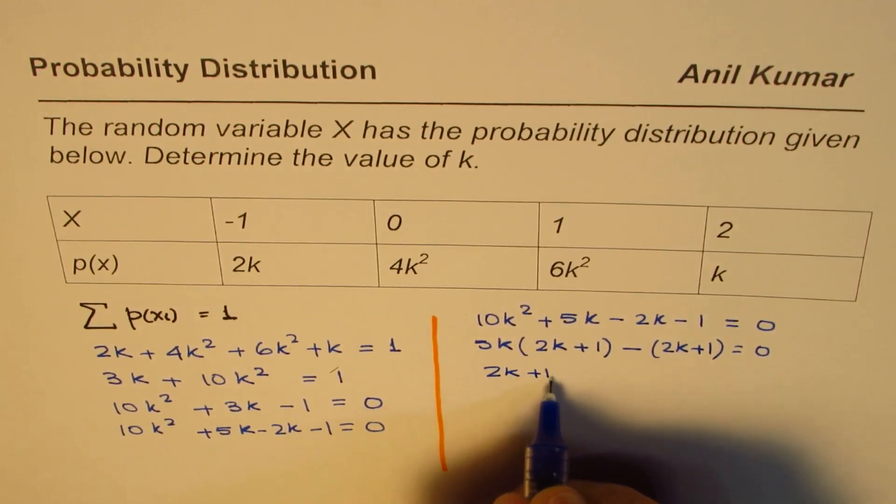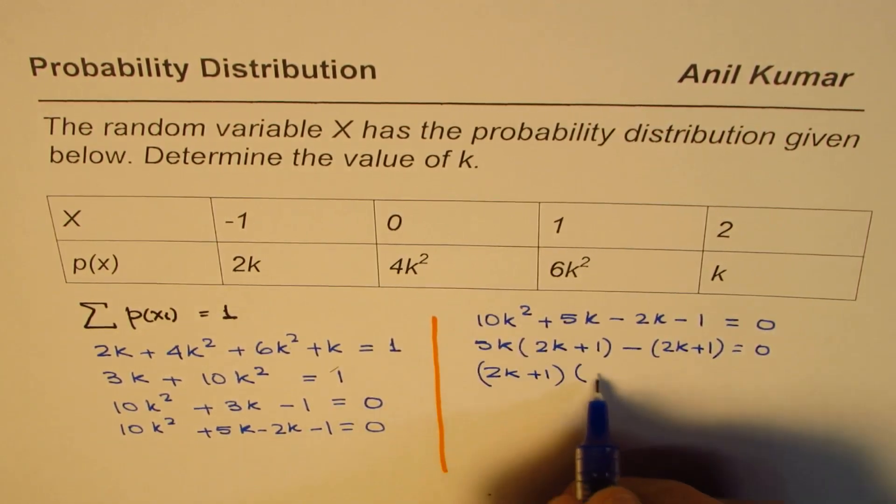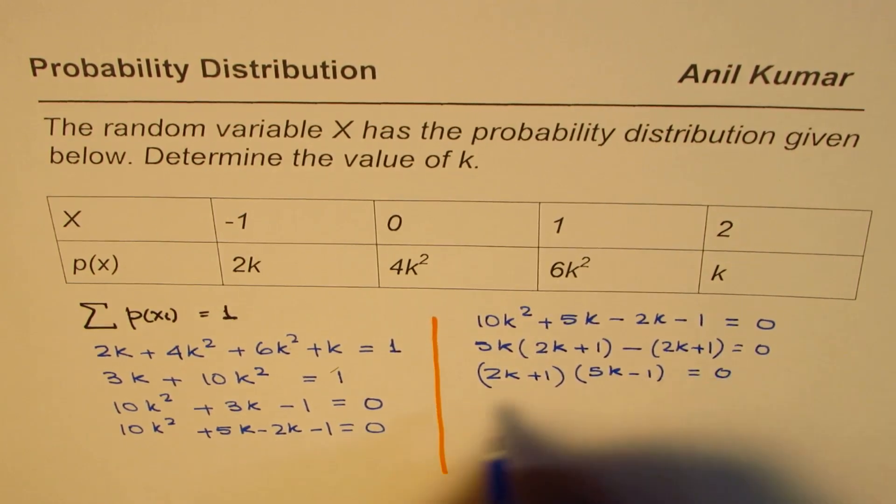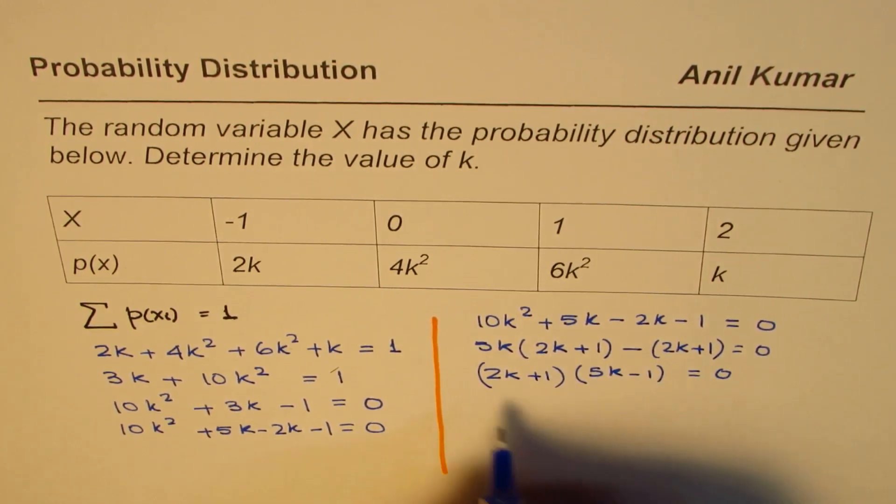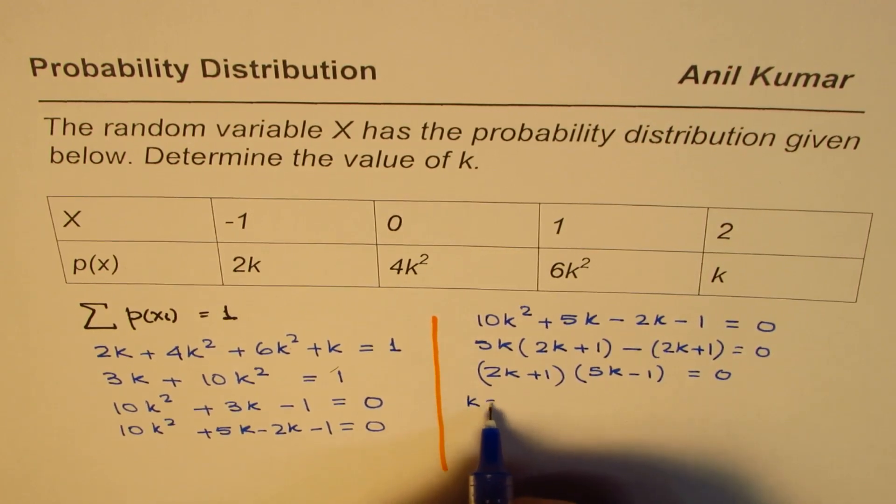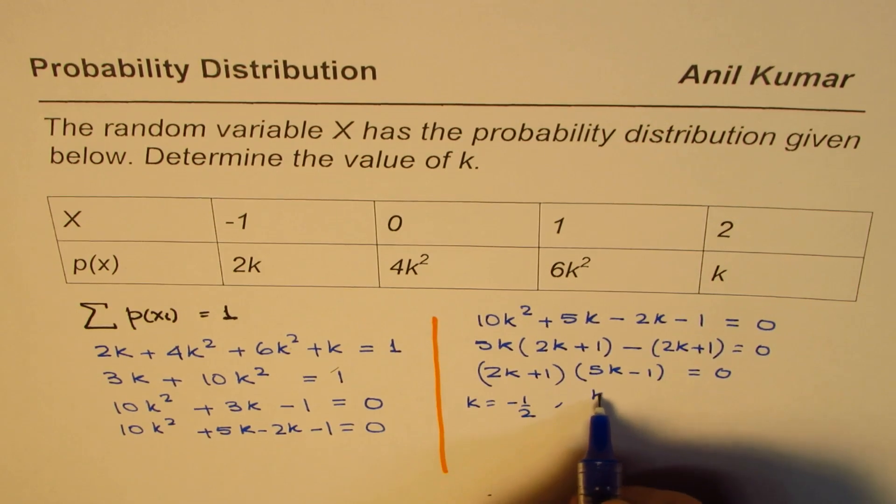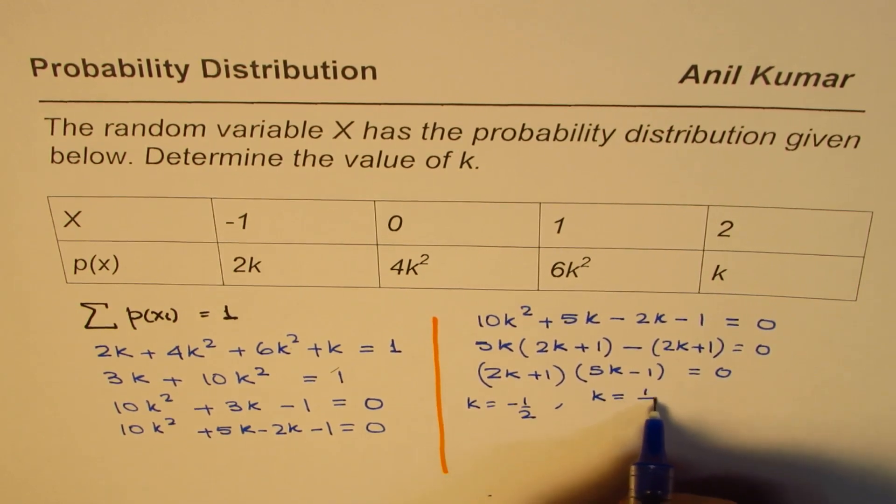Now 2k plus 1 is common, times 5k minus 1 equals to 0. Now that gives you 2 possible values: k could be equals to minus half and the other one is k could be equals to 1 over 5.